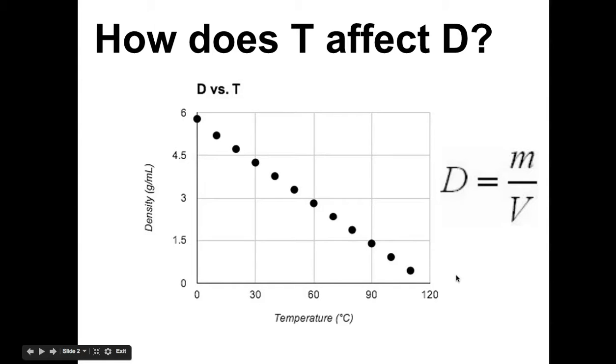As temperature goes up, density will go down. And this kind of brings us to how phase changes work, because as temperature goes up and volume gets higher and higher, you start getting into different phases of matter that are less dense accordingly.